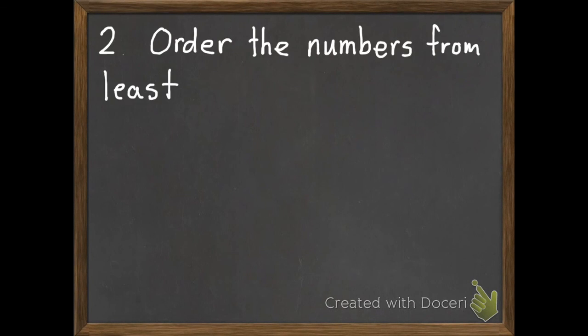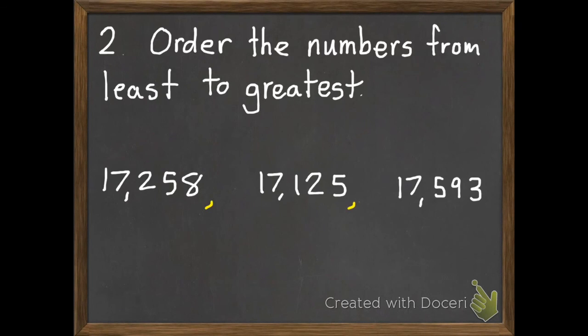Okay. Last problem for the day. Order the numbers from least to greatest. Your numbers are 17,258, 17,125, and 17,593.